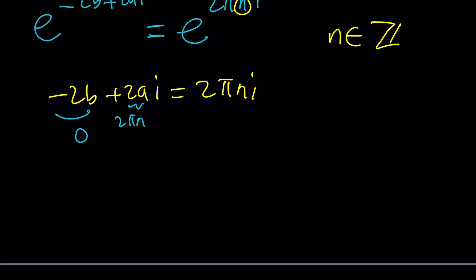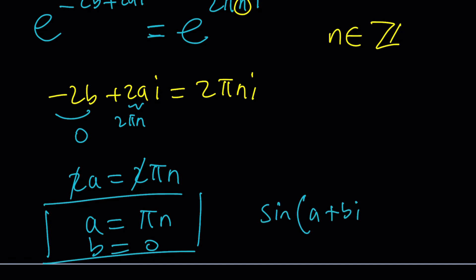So, we get 2a equals 2 pi n. a becomes pi n and b becomes zero. So, the number that satisfies this is just going to be sine of a plus bi is zero if a plus bi is pi n or a multiple of pi. And this brings us to the end of the video.